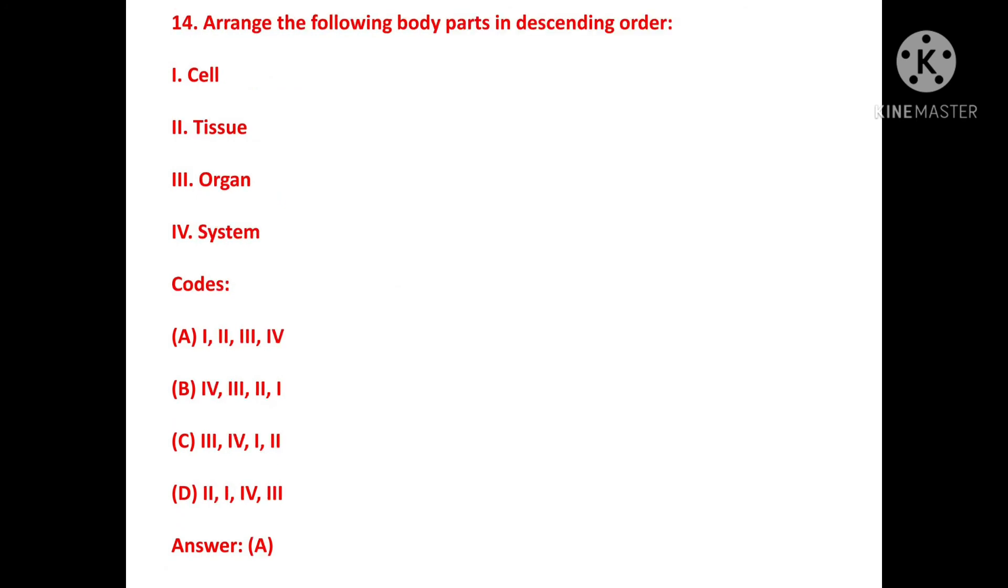Fourteenth question: Arrange the following body parts in descending order. Option 1, Cell. Option 2, Tissue. Option 3, Organ. Option 4, System. The correct answer is A. Cell, Tissue, Organ, System.